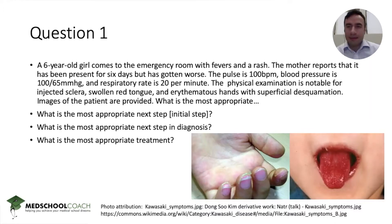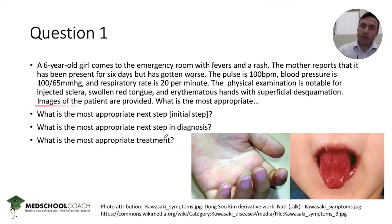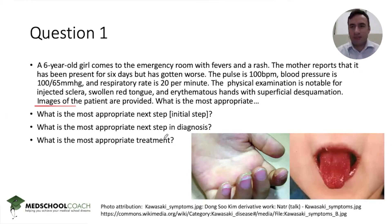With each disease entity, hopefully by the time you're going through the vignette, you've got an idea in mind about what the disease is, especially if you're looking at a question stem where there are images provided. If you can get through an image quickly, you're oftentimes going to be thinking of the right answer before you even look at the distractors, and you can answer these questions in 15 to 30 seconds and save time for those longer vignettes later in the exam.